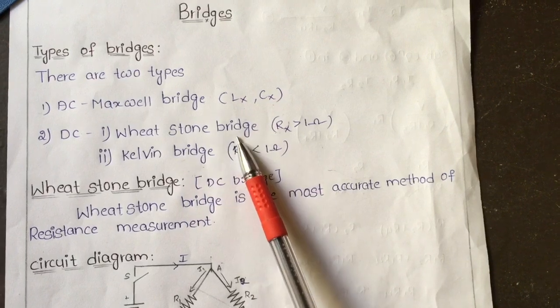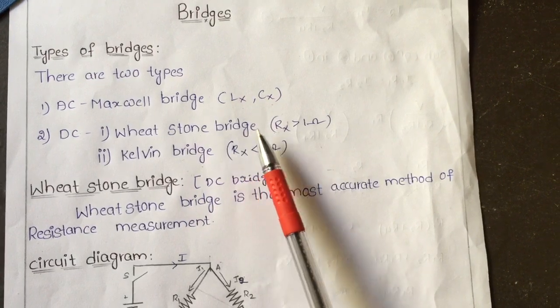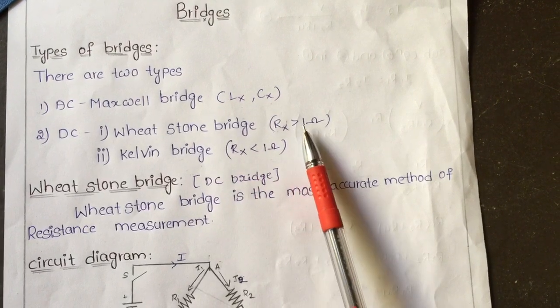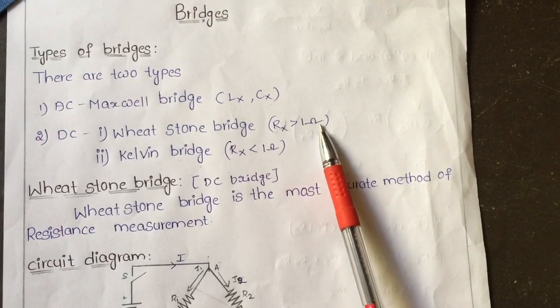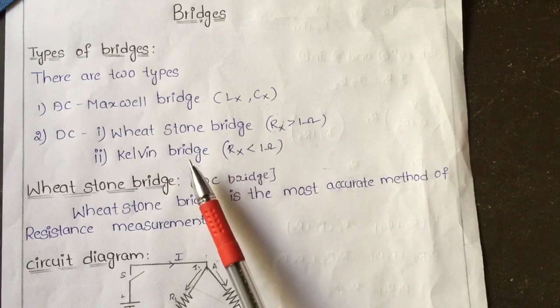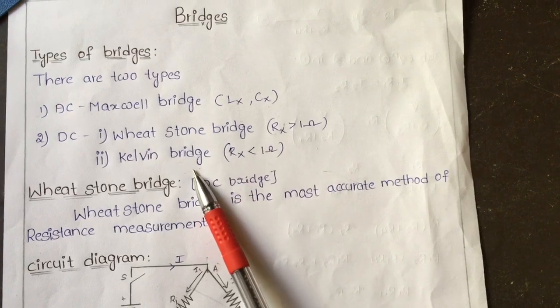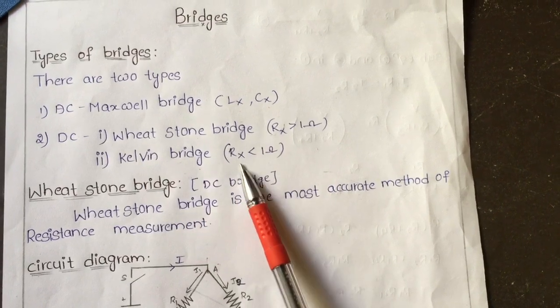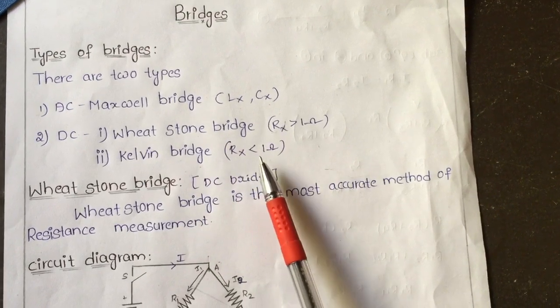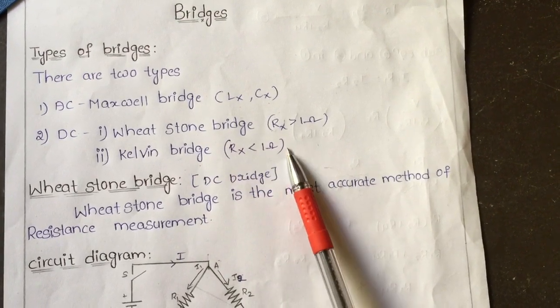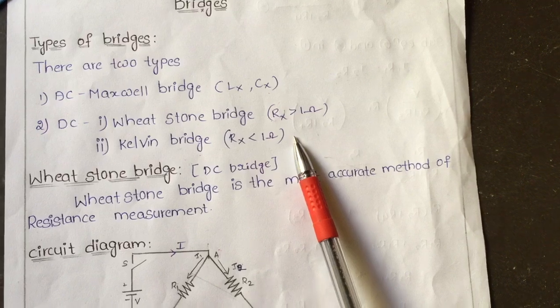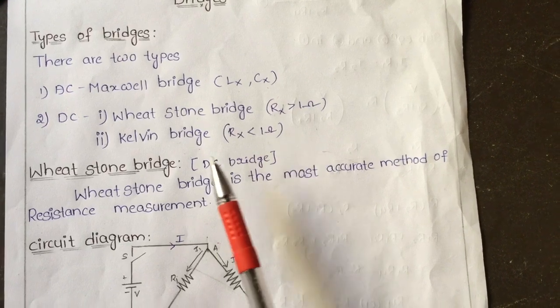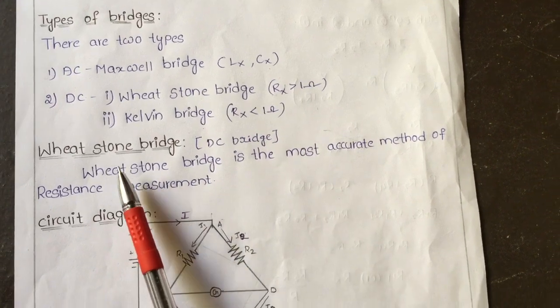By using Wheatstone bridge we are going to calculate unknown resistance which is more than 1 ohm. By using Kelvin bridge we are going to measure unknown resistance which is less than 1 ohm.